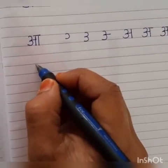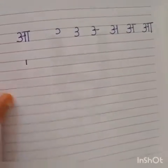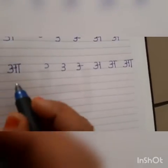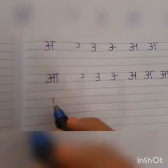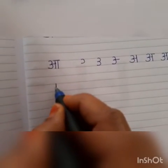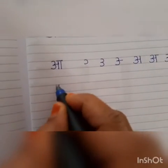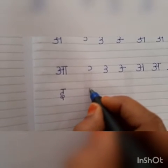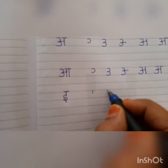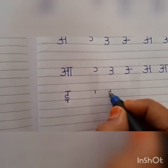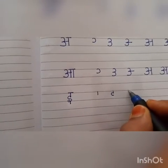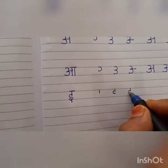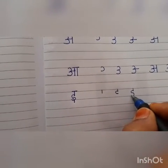Next letter E. This letter is E. One standing line, one curve, again one more curve.